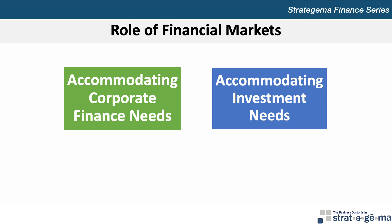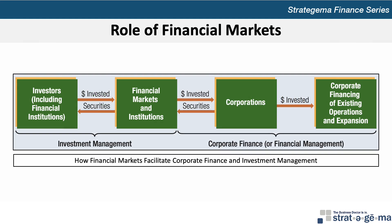Investment management involves decisions by investors regarding how to invest their funds. Financial institutions serve as intermediaries within the financial markets by channeling funds from investors to corporations that need financing. This diagram illustrates how investors' surplus money flows through the financial markets and institutions to the corporations which use those funds to finance operations and expansion. In exchange for those invested funds, the investors receive securities, such as bonds or stocks.